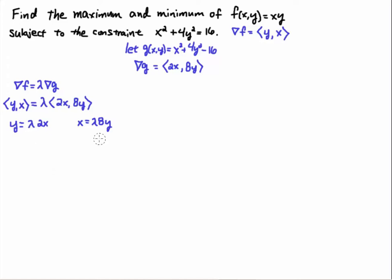This is a situation where we'll eliminate lambda. There are cases where you might get different values of lambda — I have another video discussing that scenario, and I'd encourage you to look at it. But here we'll solve for lambda directly. In cases with multiple lambda values, you might have the same variable on both sides — like a y squared — and you'd factor those out to find multiple lambdas. But because these equations are linear, we're going to be able to eliminate lambda.